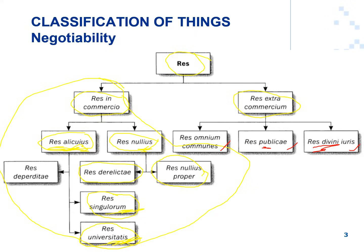The significance of this classification diagram is that when you classify something according to its negotiability, it gives a specific description of the thing that will ultimately impact how it can be acquired, how rights over or in the thing are protected, and how rights in or over the thing can be enforced. For example, res universitatis versus res derelicti or res publici are regulated differently in the law of things.